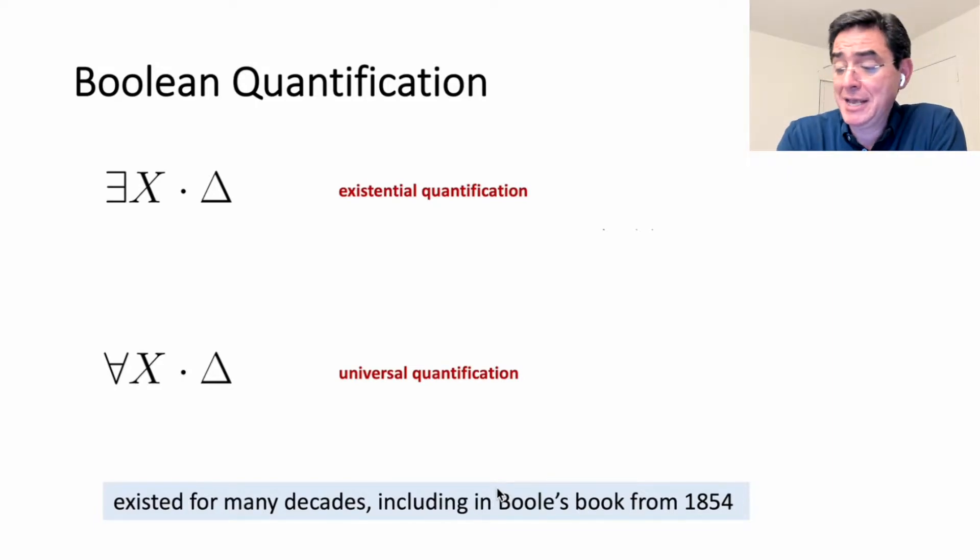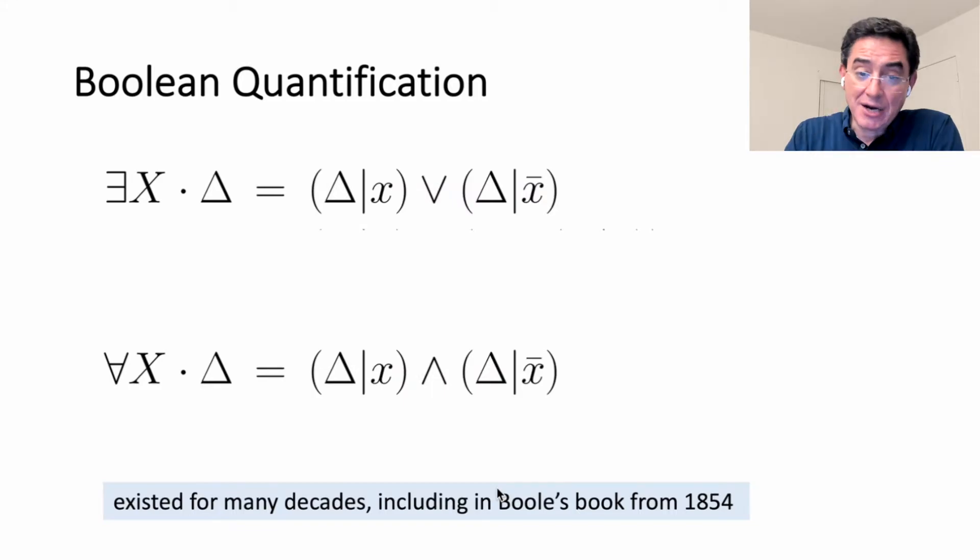Let's now talk about Boolean quantification and how we're going to use it to achieve the goal that we set ourselves to. There is existential quantification and universal quantification. In both cases, we quantify a variable from a formula. Here, x is a variable, delta is a formula. Here are the definitions of these operations. Let's start with the first one. This says take the formula delta and replace every occurrence of variable x with true.